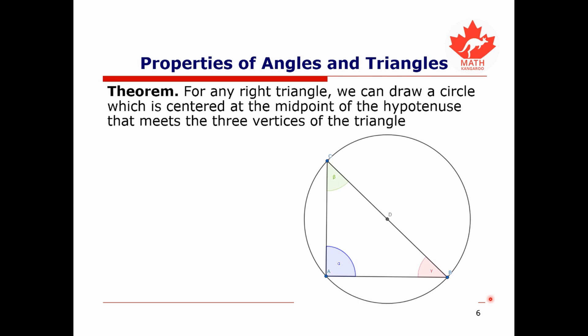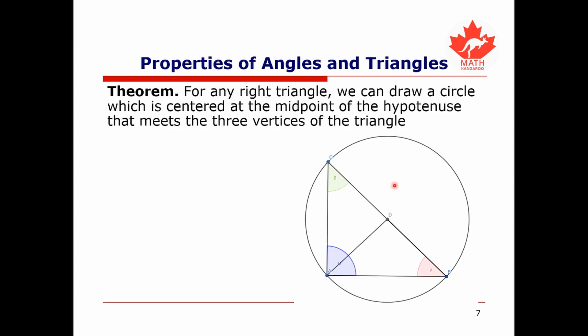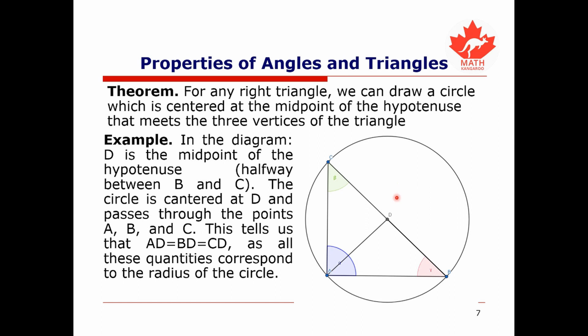Finally, we'll look at a theorem that will come in handy for one of these problems. The theorem tells us that if we have a right triangle, we can draw a circle whose center is at the midpoint of the hypotenuse, and this circle passes through all three vertices of the triangle. In this diagram, D is the midpoint of the hypotenuse, so the circle centered at D passes through A, B, and C. Since a circle has a fixed radius, AD equals BD equals CD.